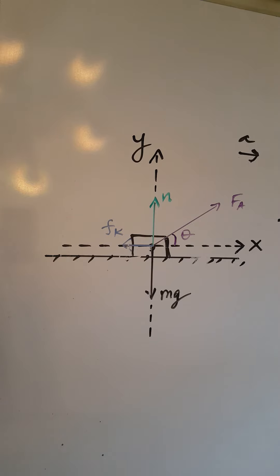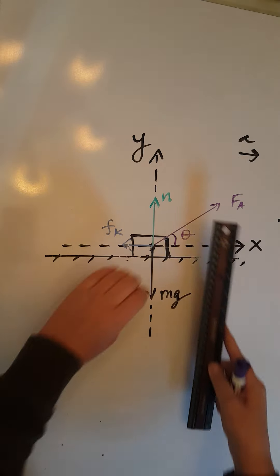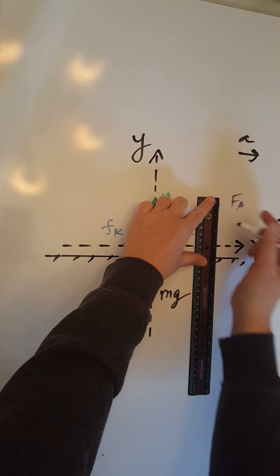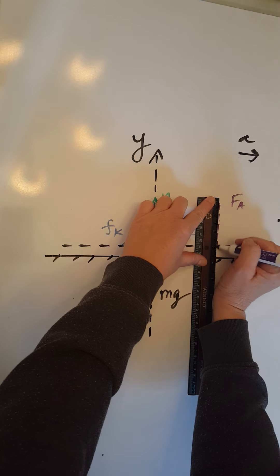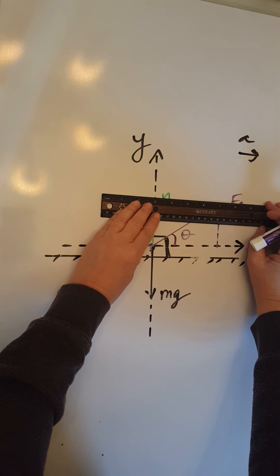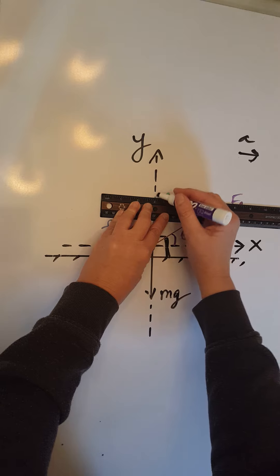So now, back to resolving F a. From the arrow of F a, we are going to draw perpendicular to the x axis. Very careful, that's perpendicular again. And another perpendicular to the y axis. Once again, very careful, that is a perpendicular.